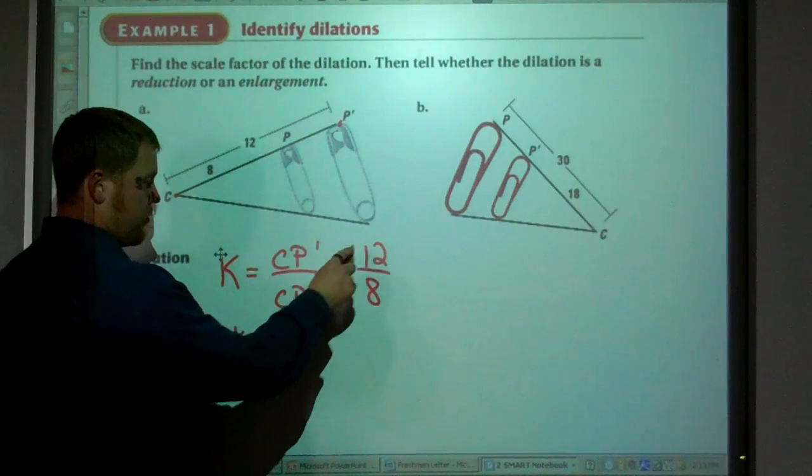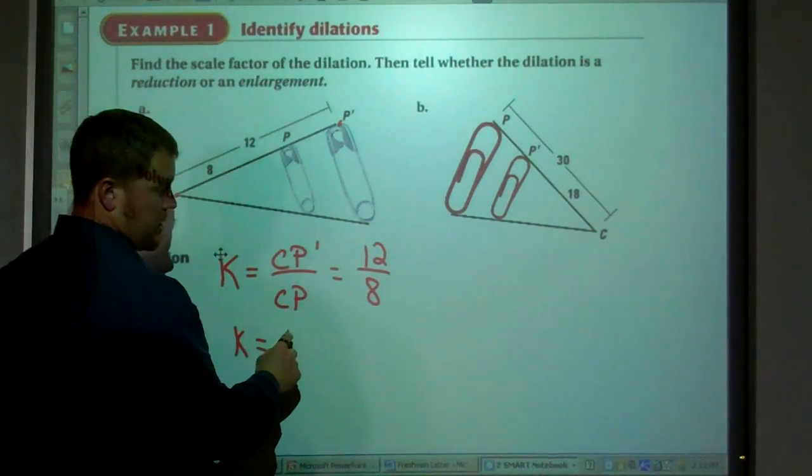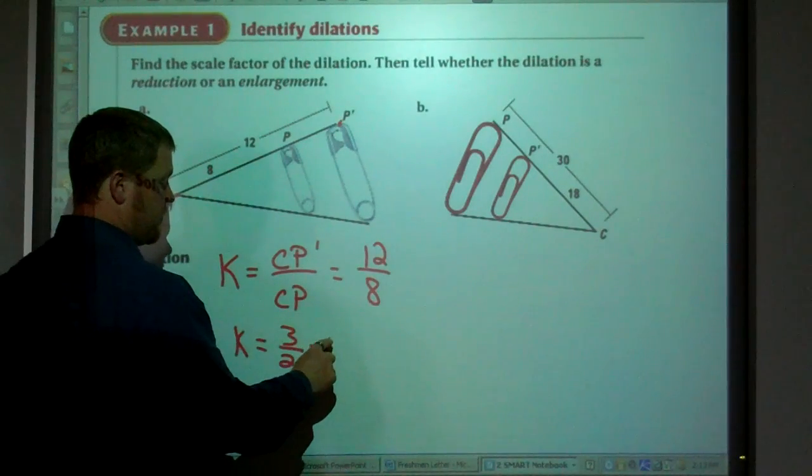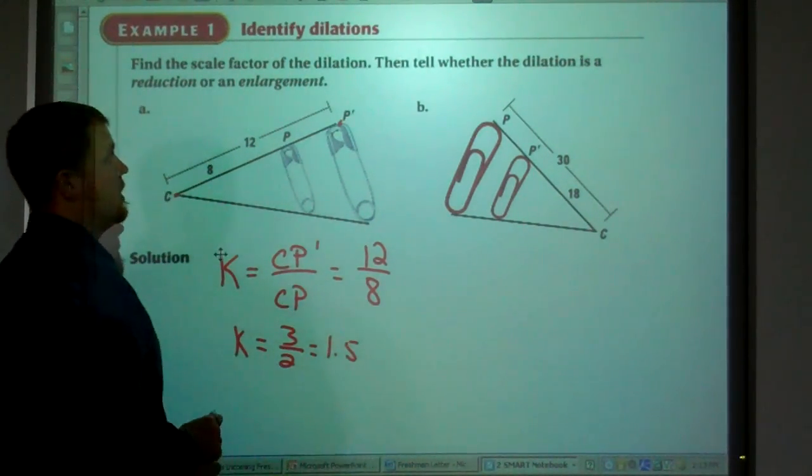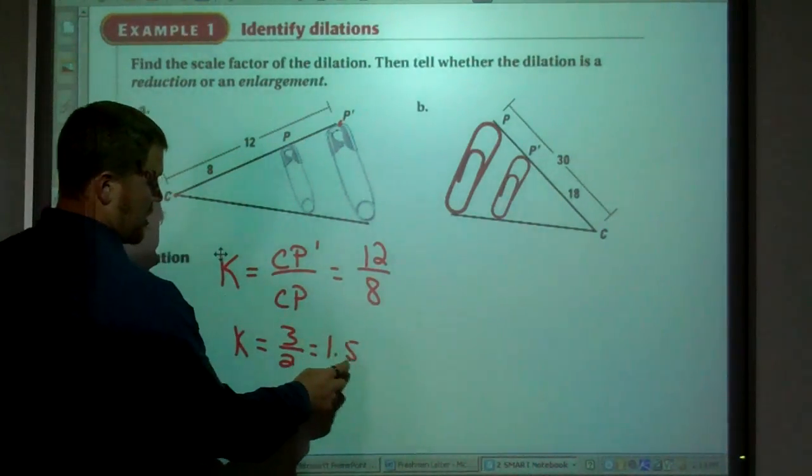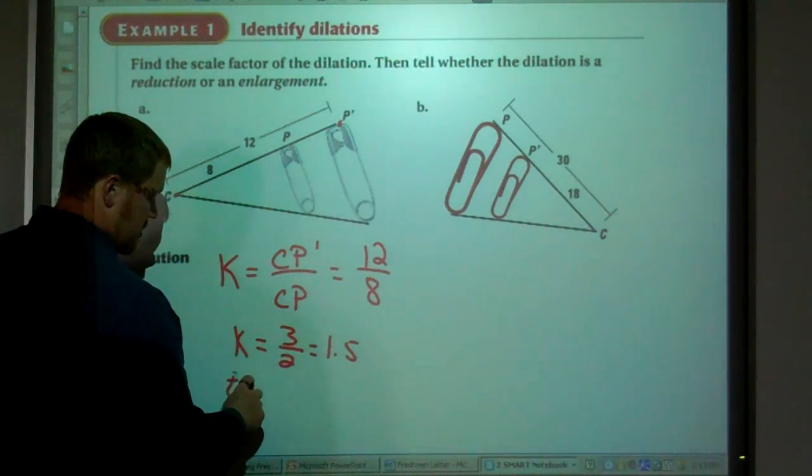So K equals, if we reduce that, we get 3 halves, which is 1.5. Is this a reduction or an enlargement? K is greater than 1, so that is an enlargement.